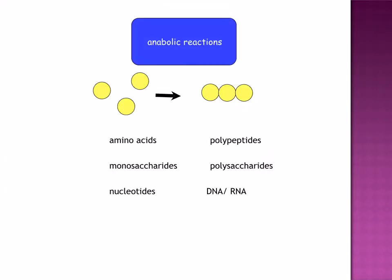Anabolic reactions — this is when simple substances are built into complex substances. For example, amino acids are built into polypeptides, monosaccharides into polysaccharides, and nucleotides are synthesized into DNA and RNA.